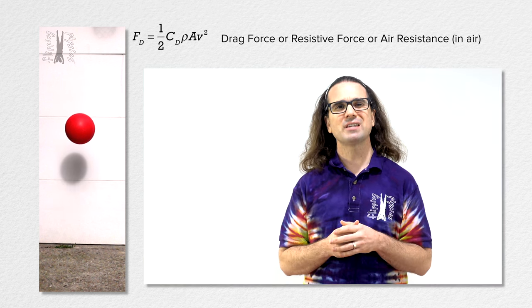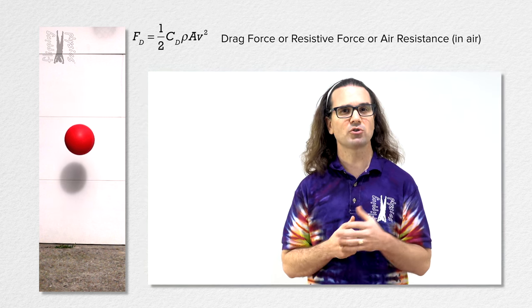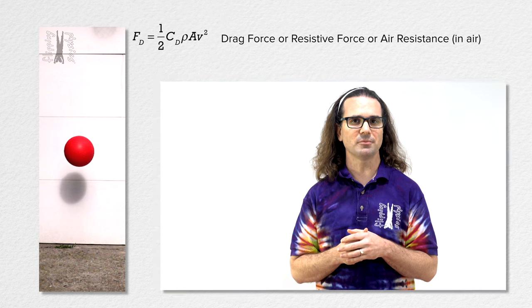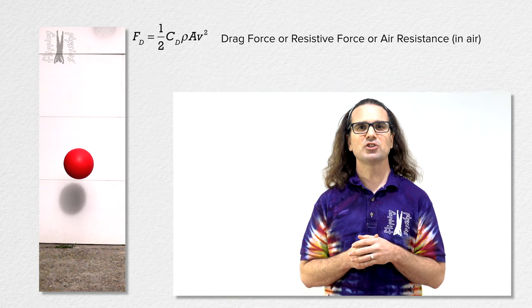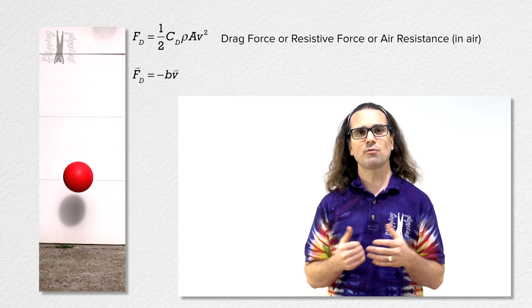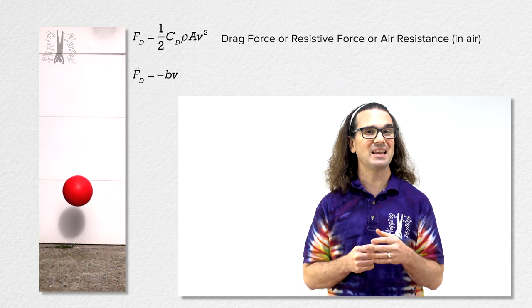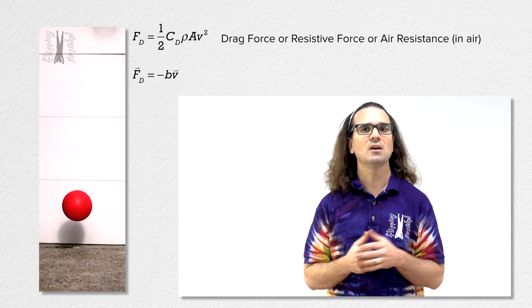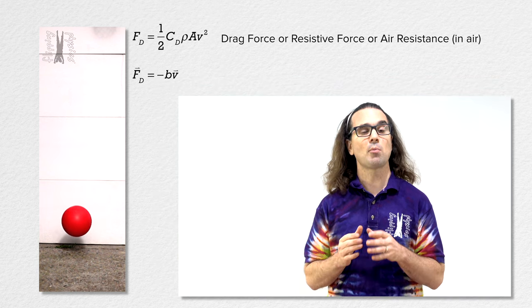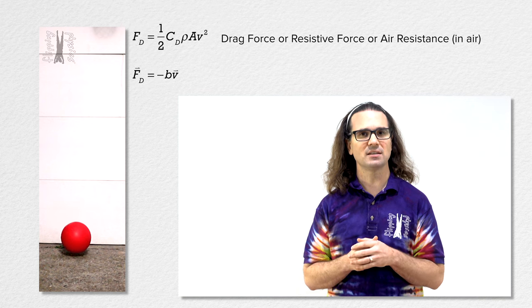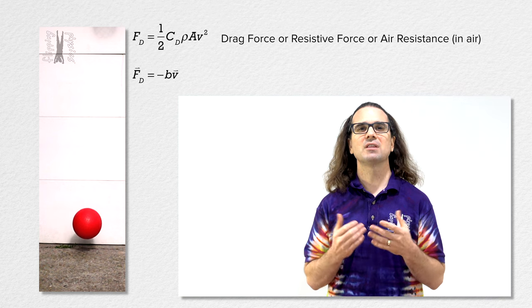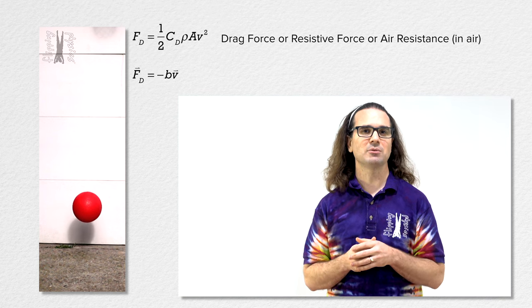Today we are going to use a much simpler drag force equation. The equation is the drag force equals the negative of b — which is called the proportionality constant — times the velocity of the object.